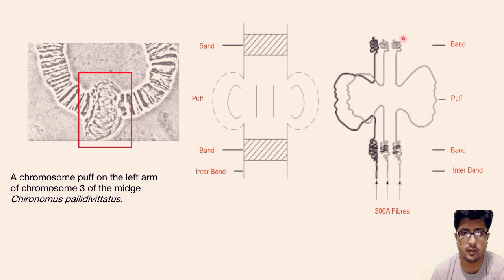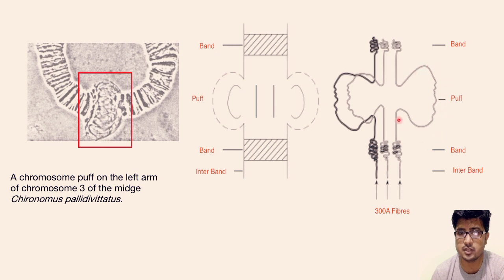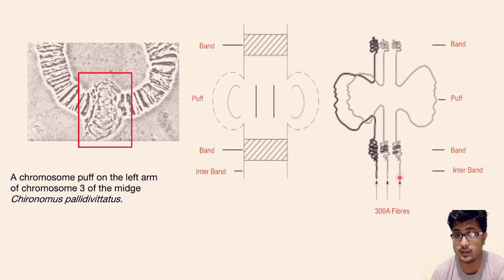Here you can see the formation of puffs. There are dark bands, light bands, and in between them are the puffs, as shown here from Chironomus pallidivittatus. If you enlarge the puffs, you can see they are a thinner, looped-out structure that is very active in the transcription process. The dark banding pattern areas are highly concentrated DNA regions which do not participate in any kind of transcription, followed by the inter-band or light band areas.